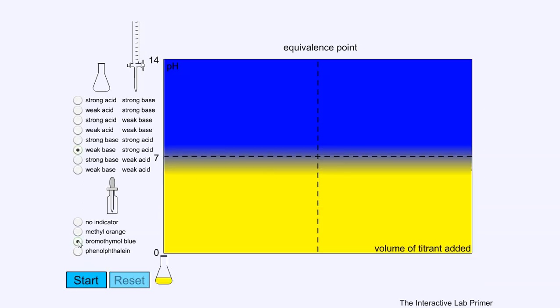If I reset and try with bromothymol blue, notice again my weak base having a drop, not starting as high a pH as well. The end point is over here, the equivalence point is over there, but there's hardly any difference in volume to go between the end point and equivalence point. So it's okay to use but not the best.